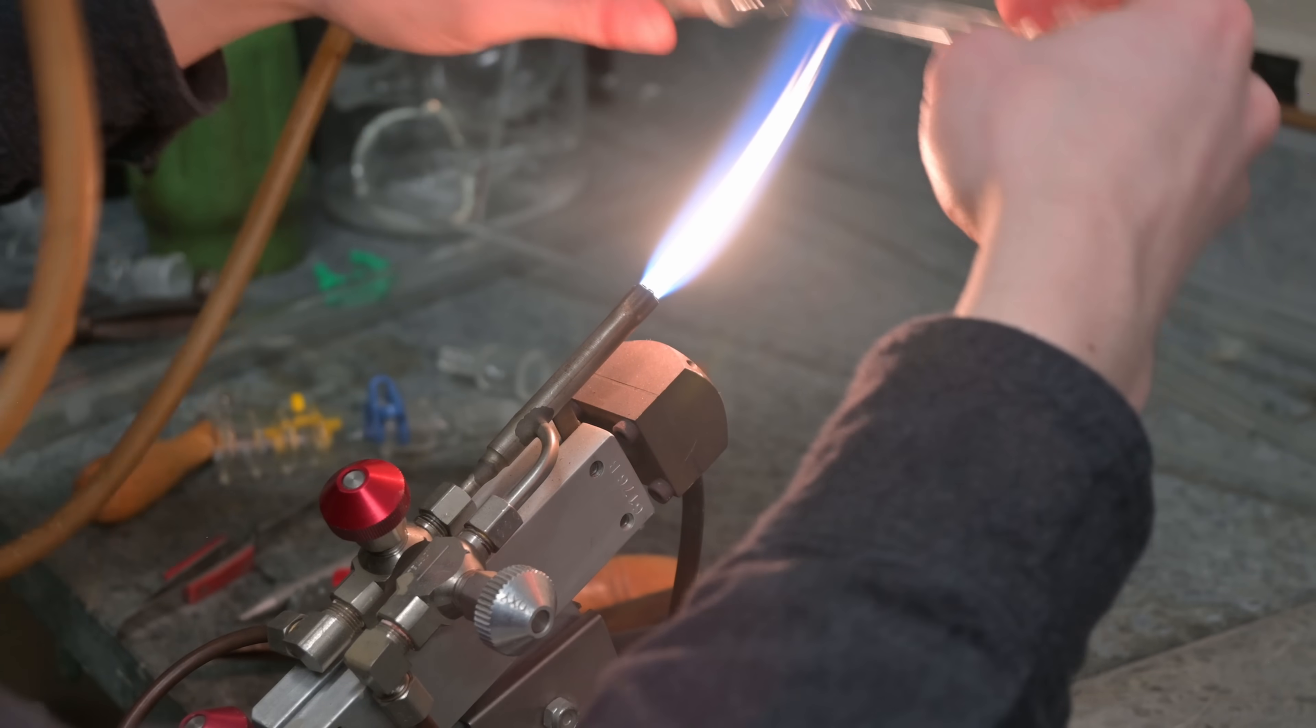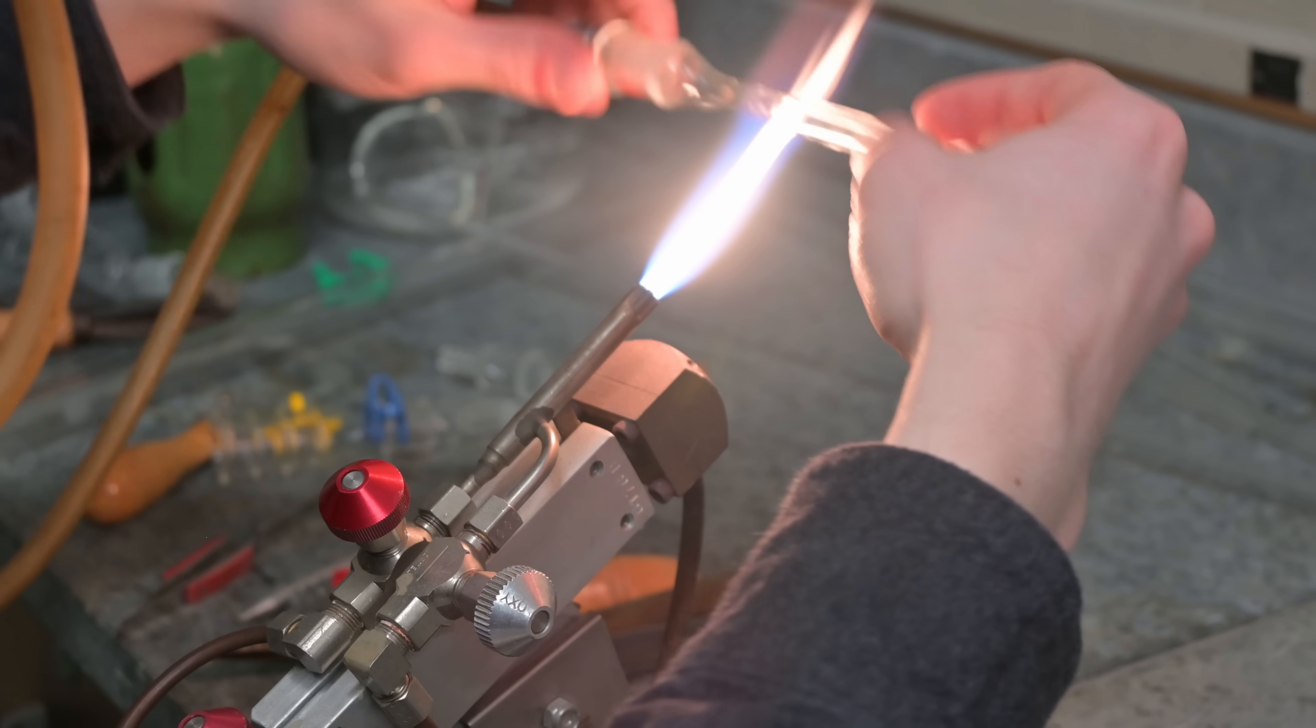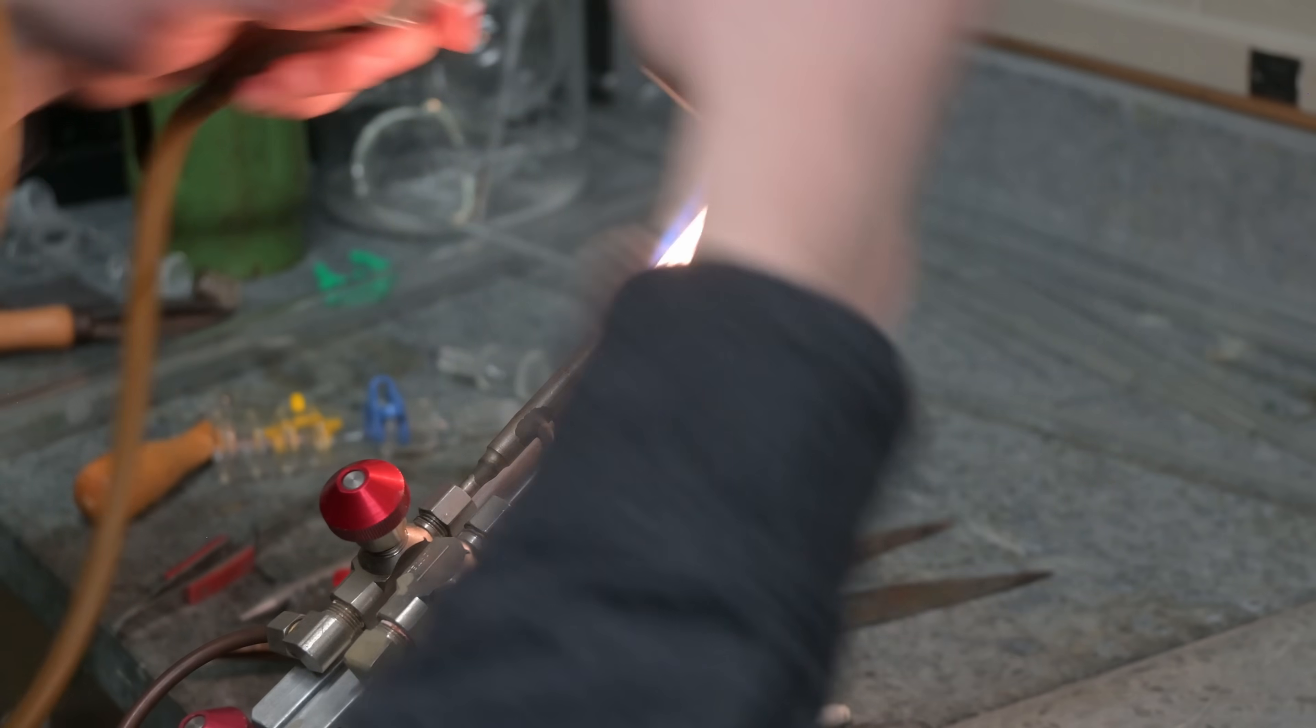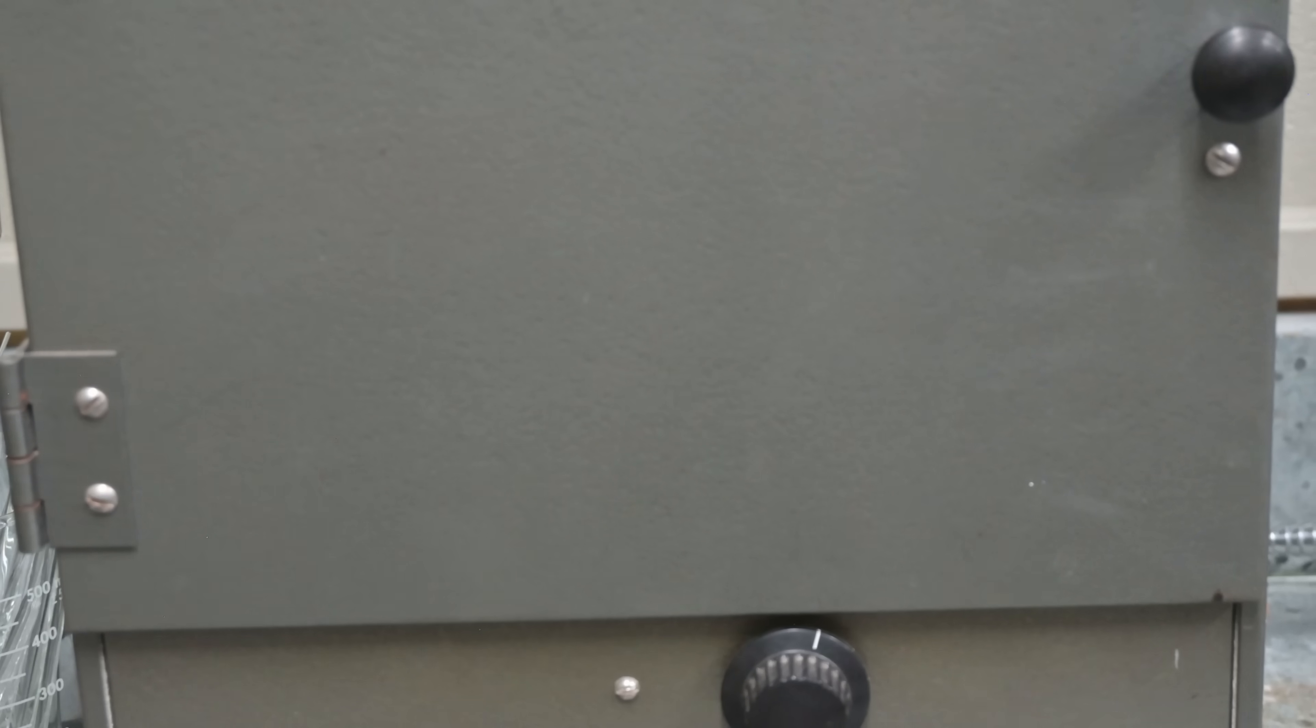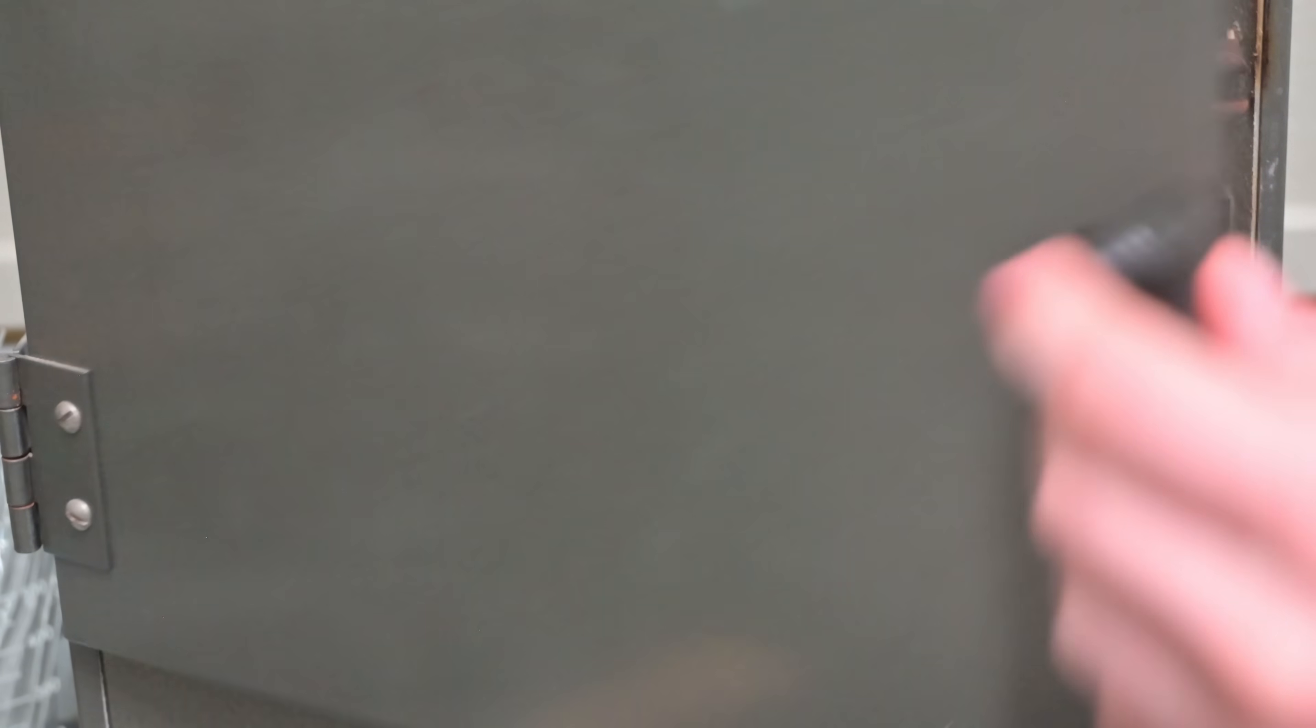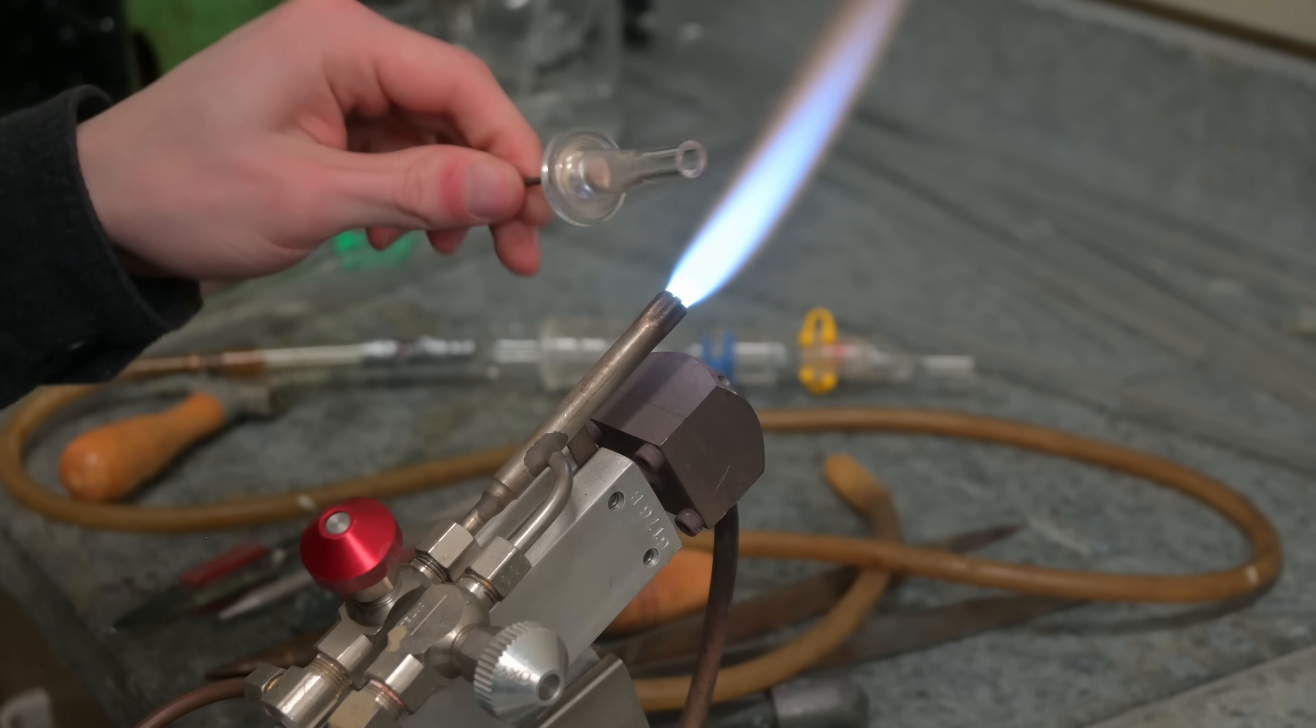Next, I gently heat the part, which will anneal it. It makes it less fragile by removing stress in the glass. After, I pop it in the oven and allow it to cool down slowly. The glass we used is called borosilicate, which is useful in glassware because it's a great ability to handle rapid temperature changes without cracking or breaking.